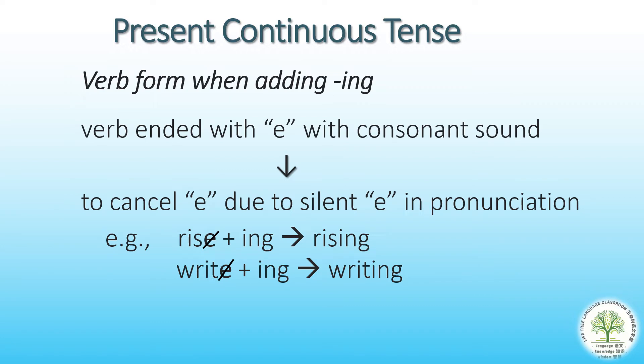If the verb ends with the letter E and its previous letter is not A, E, I, O or U, the letter E has to be cancelled before adding -ing due to the silent E in pronunciation. See the example: 'rise' becomes 'rising' and 'write' becomes 'writing'.